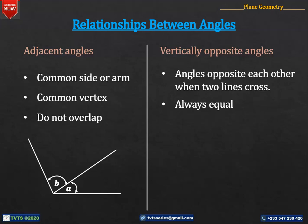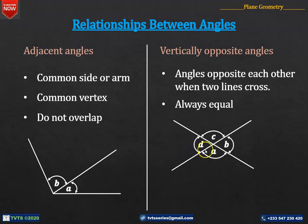For instance, if we have these two straight lines crossing each other and forming the angles A, B, C and D, then A and C are said to be vertically opposite to each other, and B and D are also vertically opposite to each other. This implies that A is equal to C, and B is equal to D.